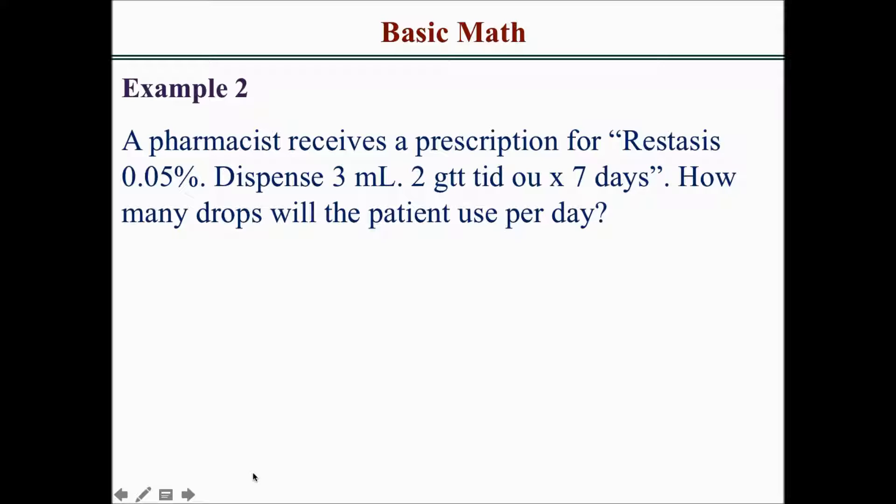Example 2: A pharmacist receives a prescription for stasis 0.05%. Dispense 3 mLs. 2 drops TID OU times 7 days. How many drops will the patient use per day?